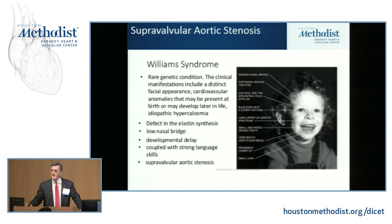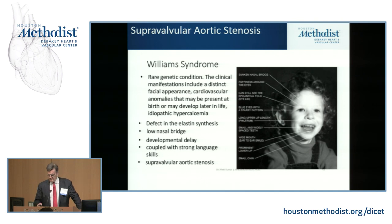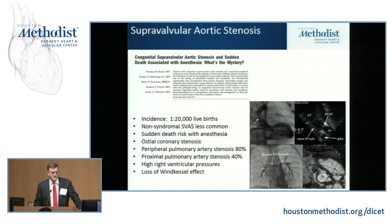We commonly think about supravalvular aortic stenosis associated with Williams syndrome, which is a defect in elastin synthesis. There's a characteristic facies, a psychosocial developmental delay, and supravalvular aortic stenosis among other things. But you can have supravalvular stenosis outside of Williams syndrome. It occurs about one in every 20,000 live births. Non-syndromal supravalvular aortic stenosis is much less common.